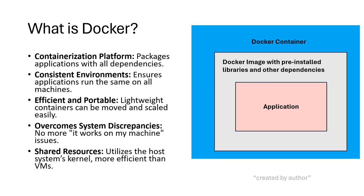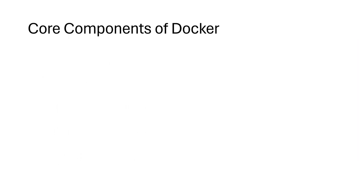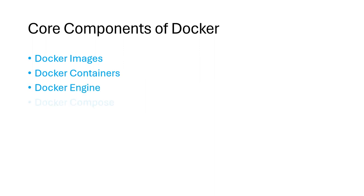Docker containers are lightweight, making them more efficient than traditional virtual machines as they share the host system's kernel rather than virtualizing the entire operating system. At the heart of Docker, there are a few fundamental core components: Docker images, Docker containers, Docker engine, Docker Compose, and Docker Hub. Together, these elements create a seamless workflow for developers to build, share, and run applications anywhere with unparalleled consistency and efficiency.